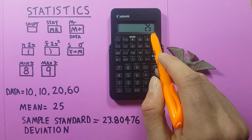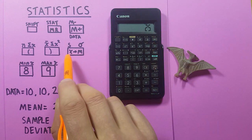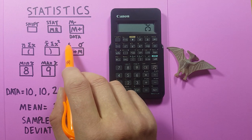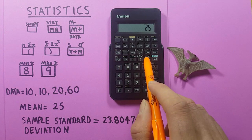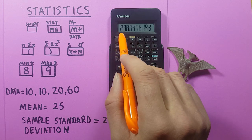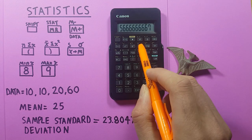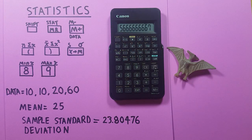We can also find the sample standard deviation using this key, this X to M key, with the S over top of it, located here. Press that and this gives us our sample standard deviation for this data set. With this we can also find our sample variance by simply squaring it, and we see our sample variance is 566.6666, etc.